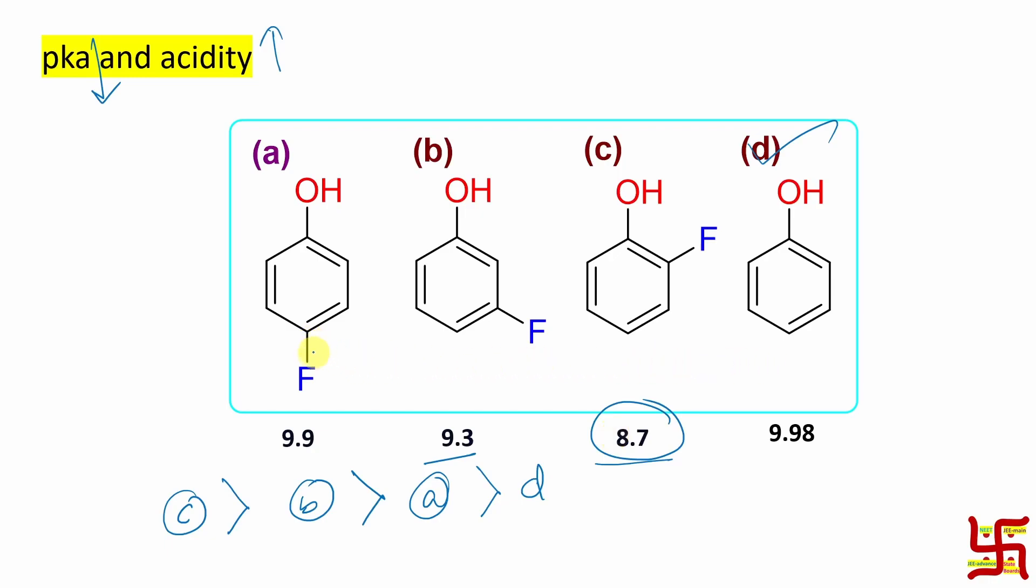One point I need to mention, student, if you want to compare this fluorophenol with chlorophenol, remember, chlorophenols are more acidic because in that case, vacant d-orbital can participate in stabilizing the conjugate base but for fluorine, there is no vacant d-orbital. So, such kind of stabilization is not possible for fluorine.